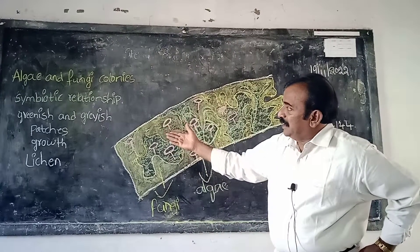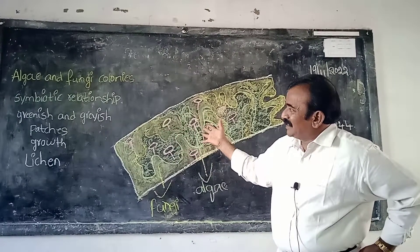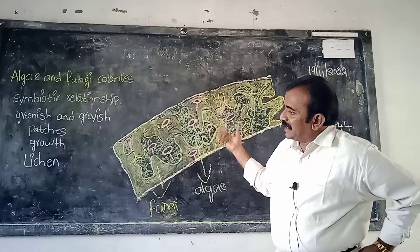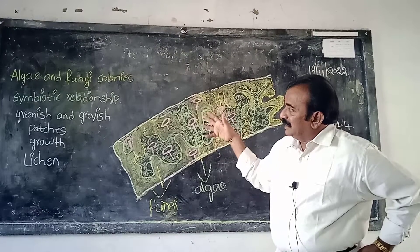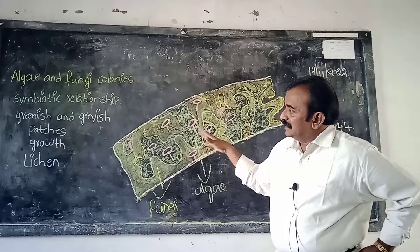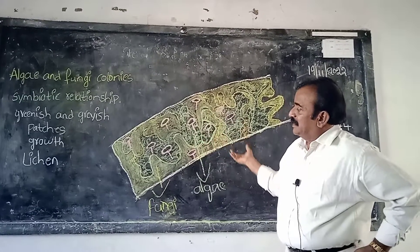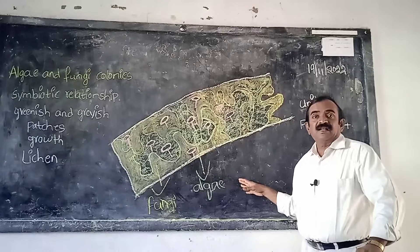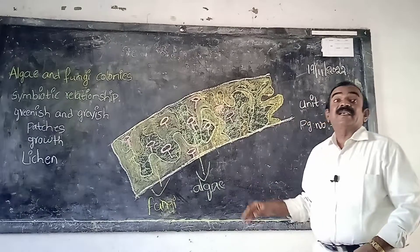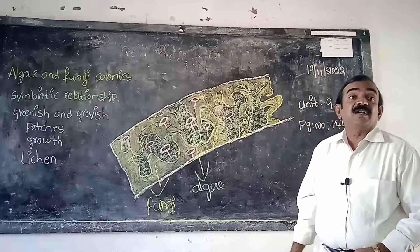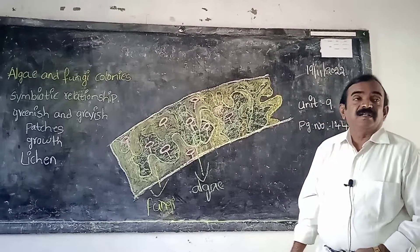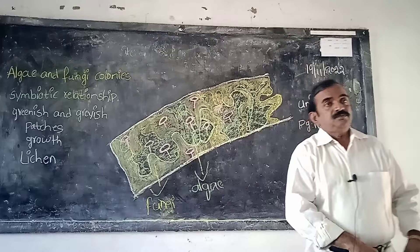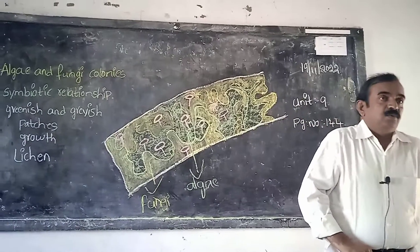They look like patches on the branch and they are greenish in color. They are called lichen.